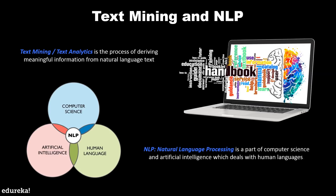Natural language processing refers to the artificial intelligence method of communicating with an intelligent system using natural language. Text mining refers to the process of deriving high quality information from text, and the overall goal is to essentially turn text into data for analysis via the application of natural language processing. That is why text mining and NLP go hand in hand.